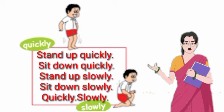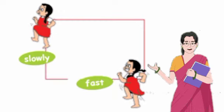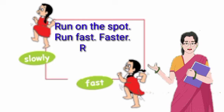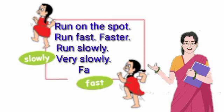Let's do the next action. Run on the spot. Run fast. Faster. Vegaane dhava. Adhik vegane dhava. Run slowly. Halu dhava. Very slowly. Agdi halu. Fast. Vegaane. Slowly.